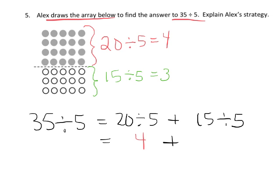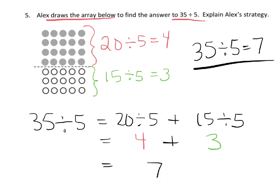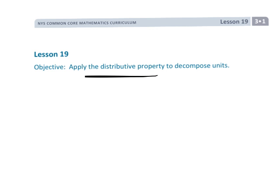Plus 15 divided by 5 is 3, so our final answer is 7. So sure enough, 35 divided by 5 equals 7. And that's how you use the distributive property to understand division. That was lesson 19.